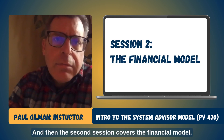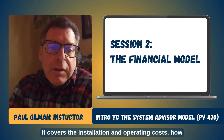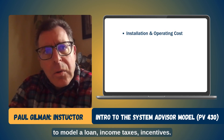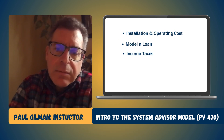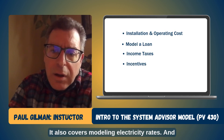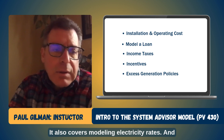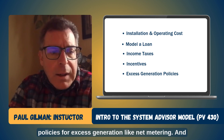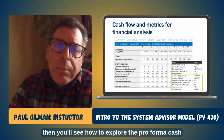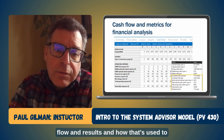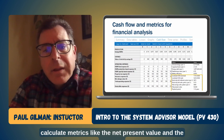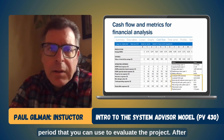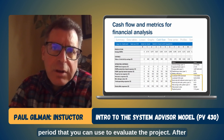The second session covers the financial model. It covers installation and operating costs, how to model a loan, income taxes, and incentives. It also covers modeling electricity rates and policies for excess generation like net metering. You'll see how to explore the pro forma cash flow and results, and how that's used to calculate metrics like the net present value and the payback period that you can use to evaluate the project.